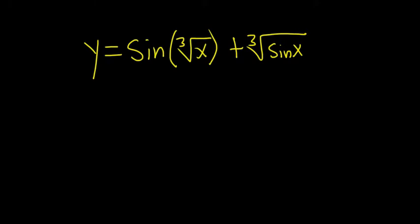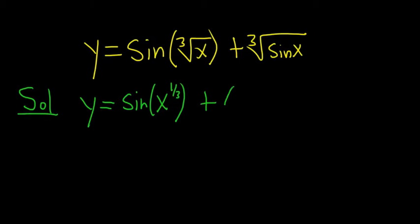Find the derivative of the function. So we'll start by rewriting this. We can write the cube root of x as x to the 1 third power. So this is y equals sine of x to the 1 third power plus, and then the sine function itself here is to the 1 third power.